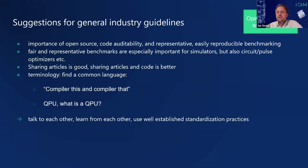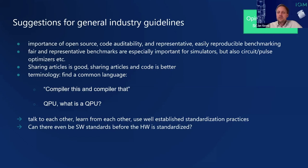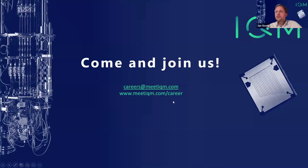Some suggestions for the broader industry: discuss what can and should be open source, define benchmarks for simulators, and benchmark actual experiments against simulated ones. Sharing articles is good; sharing articles and code is better. Standardize the language we use — what is a compiler, what is a QPU? As a final question: can there even be software standards when there are not yet hardware standards? Does it make sense to develop software standards when hardware may still change substantially?